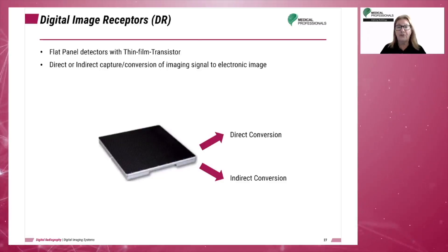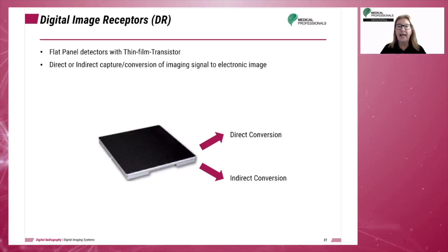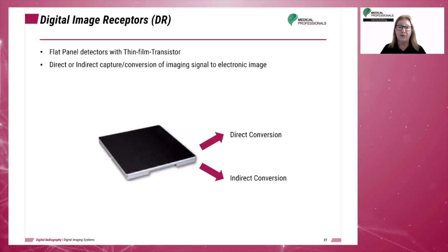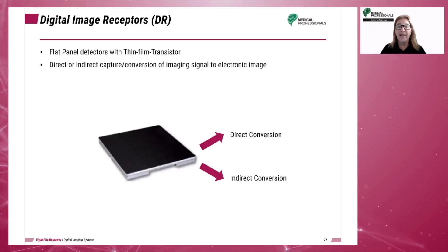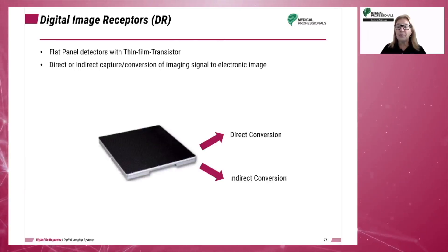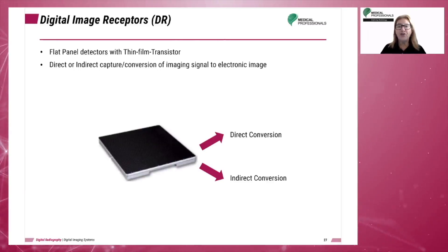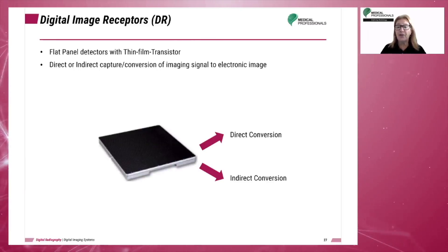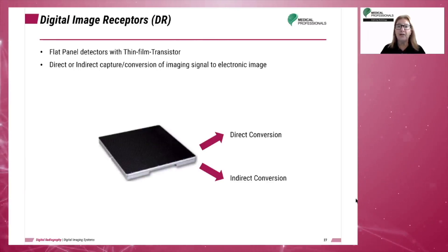Direct capture flat panel detectors use a photoconductor which converts exit radiation into an electronic signal. Indirect capture flat panel detectors need a scintillator material to capture the remnant radiation and convert X-ray photons to light photons — a two-step process: first converting incoming X-ray photons into light photons, and secondly converting those light photons to an electronic signal using a photoconductor.